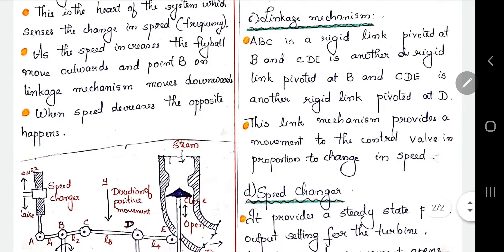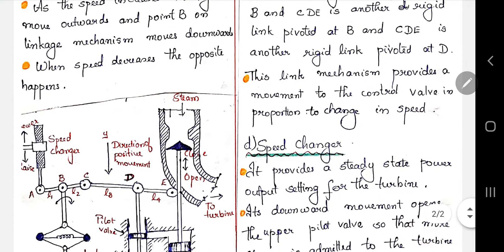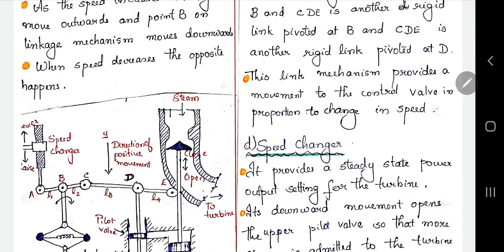The third component is the linkage mechanism. There are mainly two rigid links in the system: A-B-C is one rigid link, and C-D-E is the second rigid link. B is the main pivot of the first link, and D is the pivot of the second link C-D-E. This linkage mechanism provides movement to the control valve in proportion to the change in speed. According to the change in speed, this linkage mechanism provides movement of the control valve.